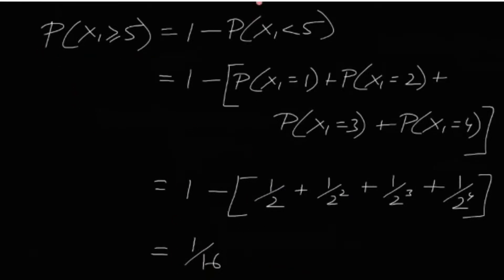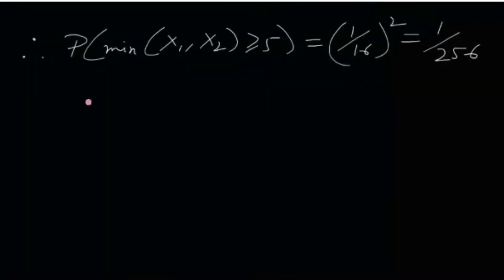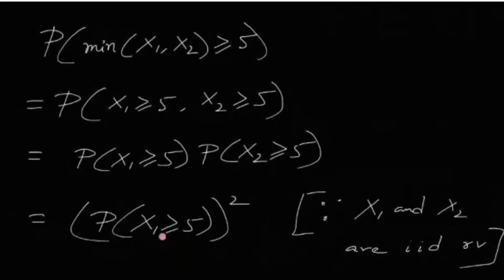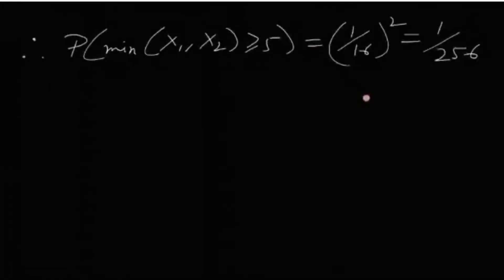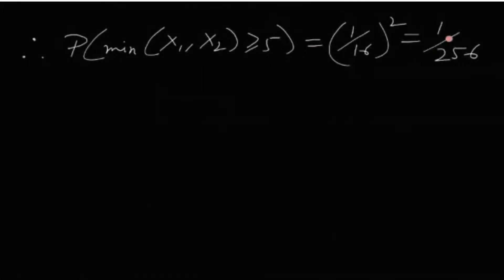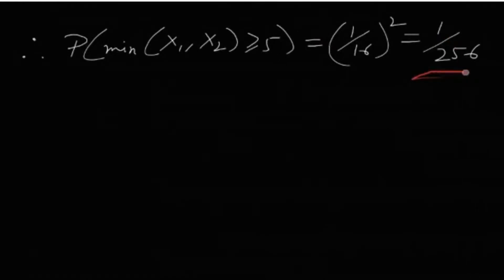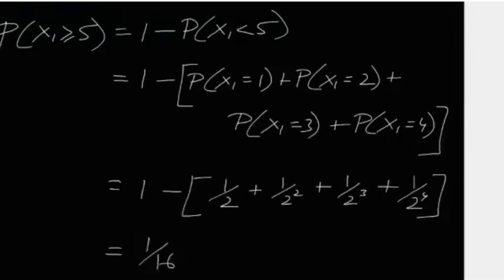This 1/16 is the value of P(X1 ≥ 5). We want P(min(X1, X2) ≥ 5), which is the square of this. So it's (1/16)² = 1/256. The answer is 1/256.